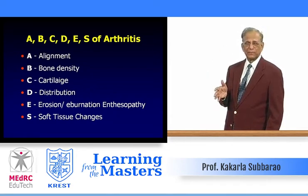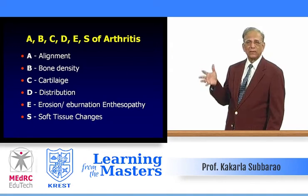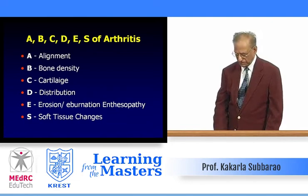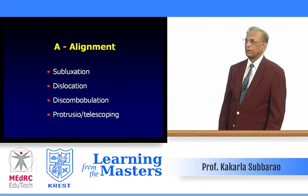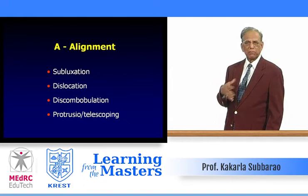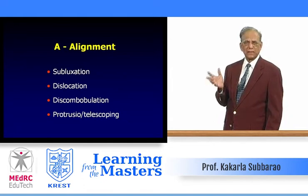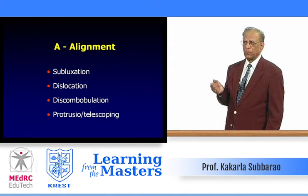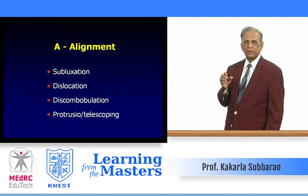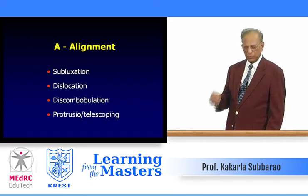If you follow this systematic pattern, analyze carefully, add and subtract findings, you will arrive at a differential diagnosis. Alignment issues include subluxation, dislocation, and discombobulation — which is complete disruption of the joint as occurs in neuropathic joint disease — as well as protrusion acetabuli and telescoping, where one bone moves into the other, often in erosive arthritis with absorption of the head and neck, or in neuropathic joint disease.